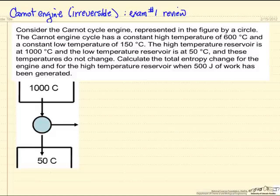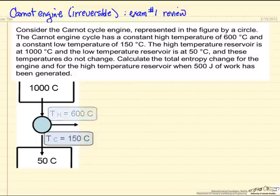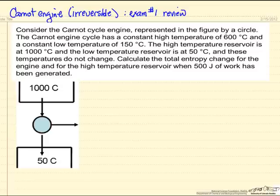In this example I'm going to look at a Carnot engine cycle represented here. We're given high temperature and low temperature reservoirs with constant temperatures. The Carnot engine high temperature is 600 degrees C and its low temperature is 150 degrees C, so there's a temperature difference between the reservoir and the engine temperatures, which means we have some rate of heat transfer. This makes the system irreversible.